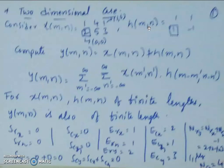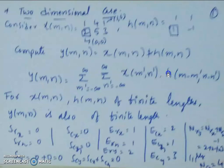We can always compute the number of rows and columns in y(m,n), just like in the one-dimensional case. The number of rows in y(m,n) is: number of rows in x(m,n) plus number of rows in h(m,n) minus 1. The number of rows in x is 2, number of rows in h is 2, so number of rows in y equals 2+2-1 = 3. Similarly, number of columns in y is 3+2-1 = 4. So y will have 3 rows and 4 columns.